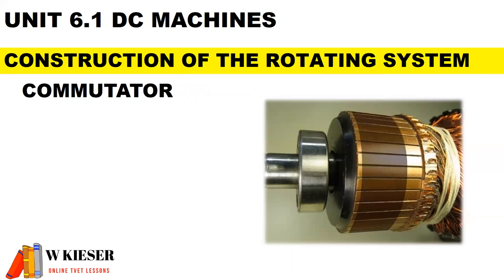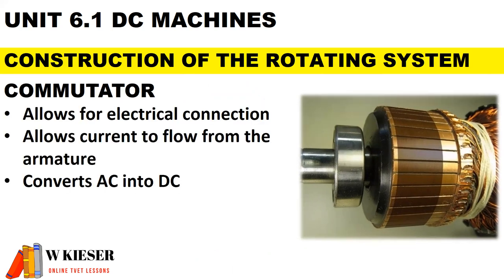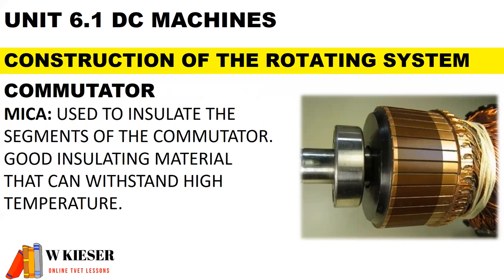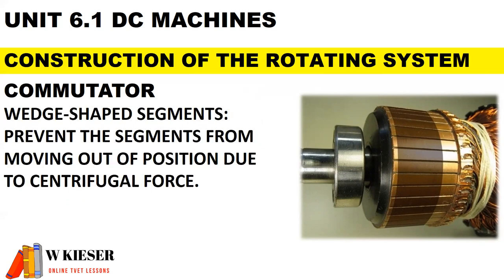The commutator is made out of copper, insulated by a material called mica, and is divided up into many segments. The main function of the commutator is to allow for electrical connection — to allow current to flow between the rotating part and the stationary part — and it converts AC to DC. Mica is used to insulate the segments of the commutator because it is a good insulating material and can withstand high temperatures. The wedge-shaped segments are there to prevent the segments from moving out of position due to centrifugal force.